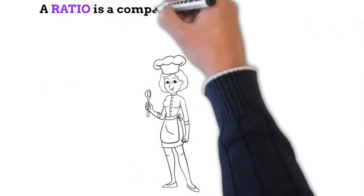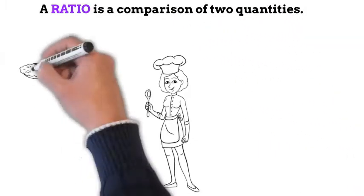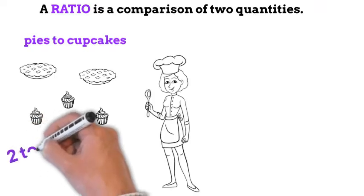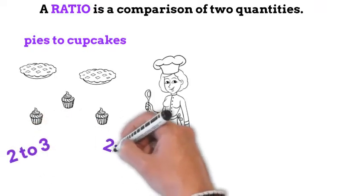Hi guys, I'm Kylie. A ratio is a comparison of two quantities. For example, the ratio of pies to cupcakes that I baked today was 2 to 3.